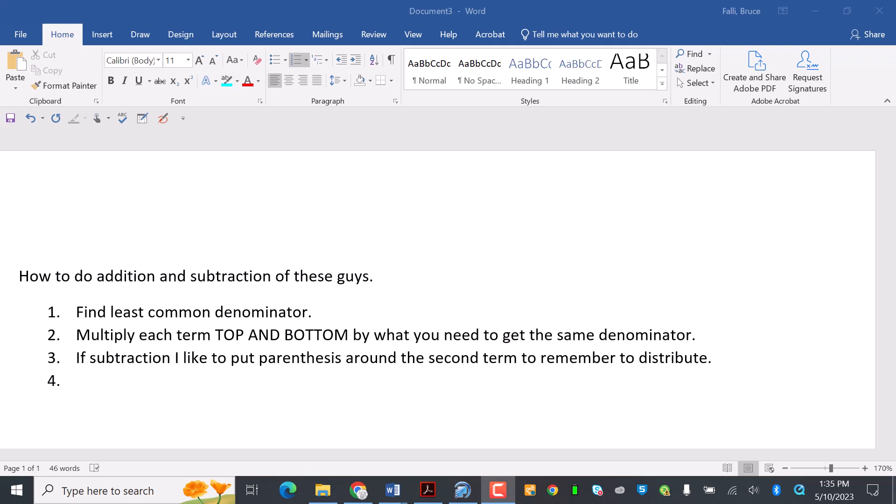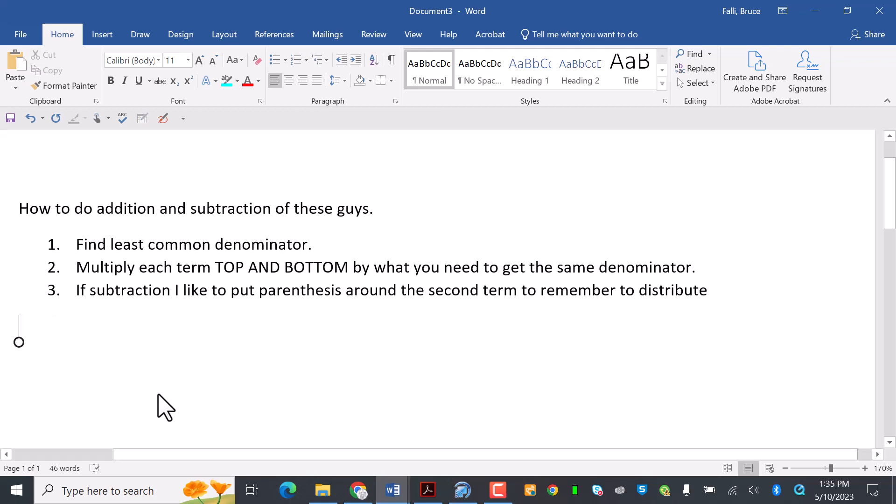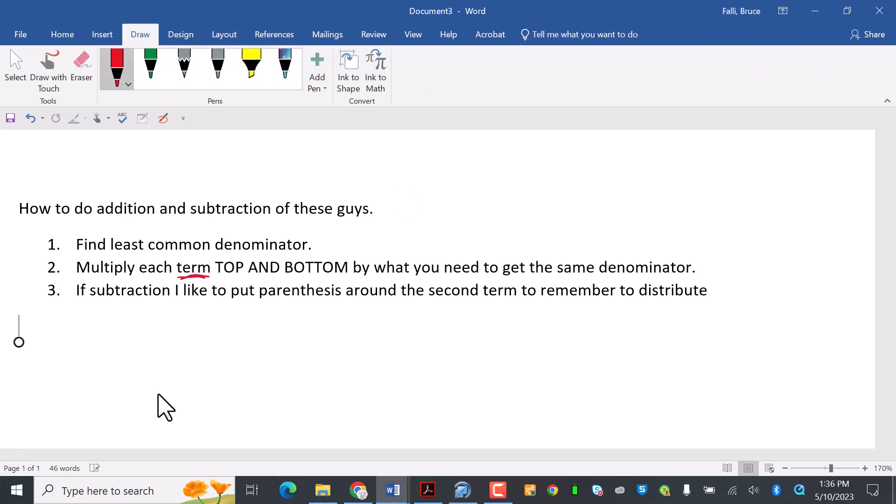Hi Marian, I'm just hammering out some of these. I wrote down how to do addition and subtraction of these guys, which is what you said was what you like the least. First thing you need to do is find the least common denominator. Multiply each term top and bottom by what you need to get the same denominator. If subtraction, I put parentheses around the second term to remember to distribute.